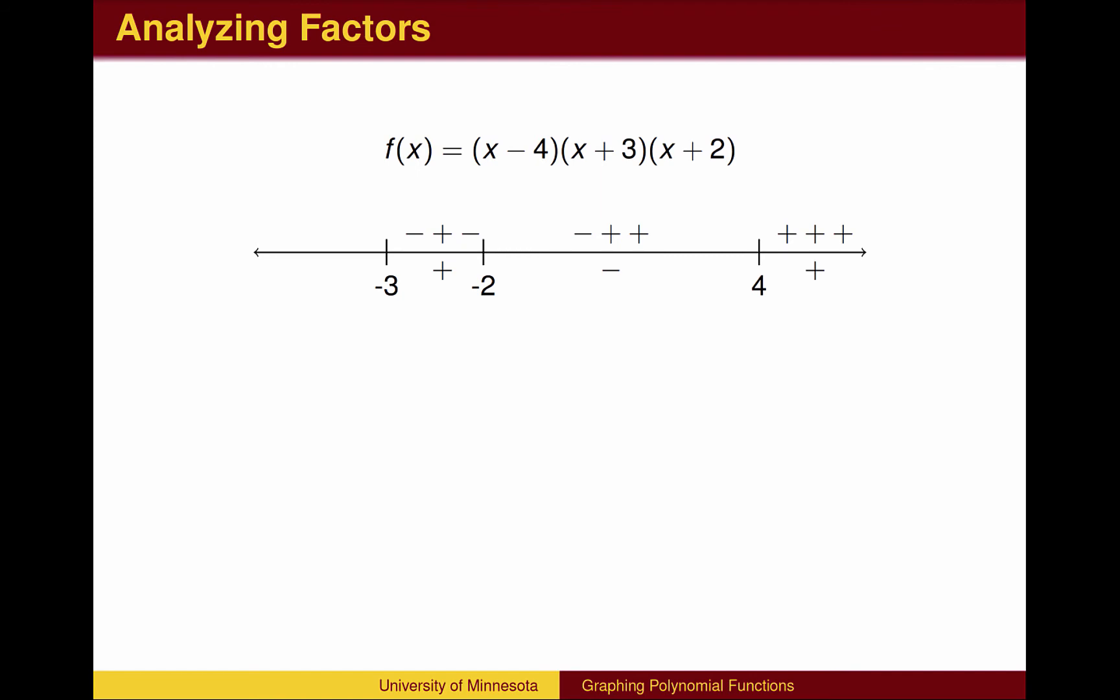Between -3 and -2, another factor changes sign, so we have two negative factors and one positive factor, making the product positive overall. Finally, to the left, all the factors are negative, and the three negatives make the product negative. We now know that the graph will be below the x-axis starting at the left, above the x-axis between -3 and -2, below the x-axis between -2 and 4, and above the x-axis to the right of 4. We can sketch the graph using this information together with the x and y intercepts.